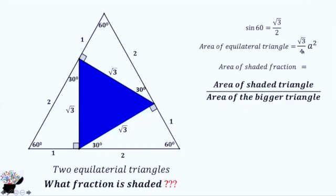Since we're dividing the area of the shaded triangle by the area of the bigger triangle, we have √3/4 in both areas, so it cancels out. We're left with just the side squared divided by the side squared.